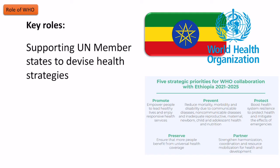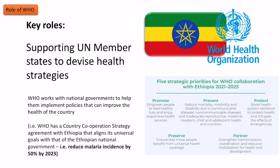WHO also works with member states to devise strategies and policies. For example, they have a country cooperation strategy agreement with Ethiopia, as with many other countries, trying to align UN and WHO goals with those of the Ethiopian government — getting Ethiopia to make changes to meet those global goals. One specific target is to reduce malaria incidence by 50 percent by 2023. This is where WHO's long-term goals are implemented through dialogue with member states.